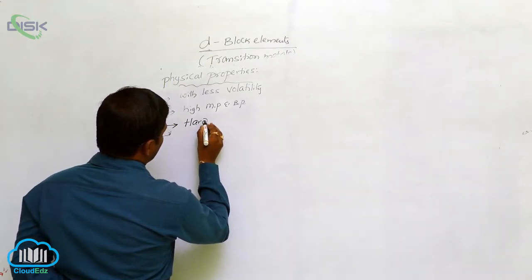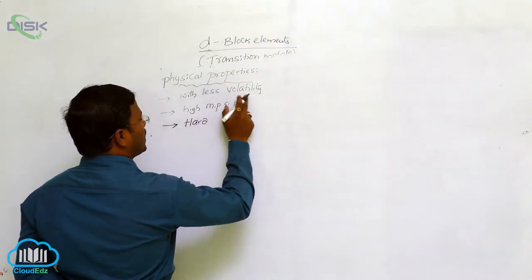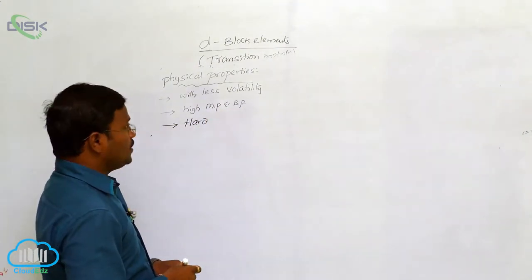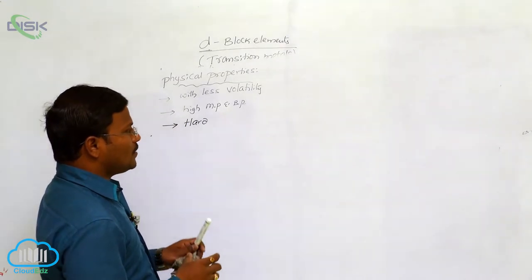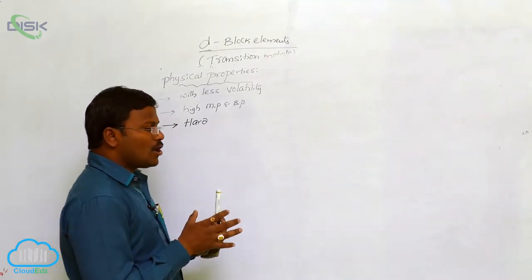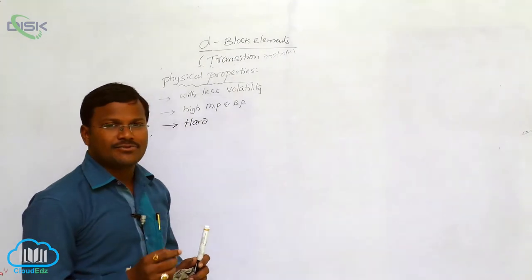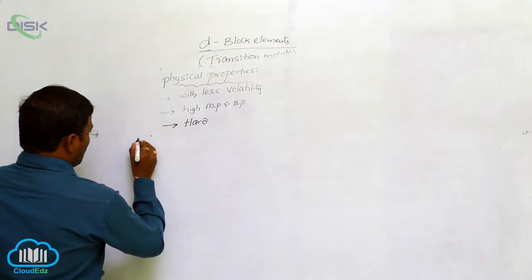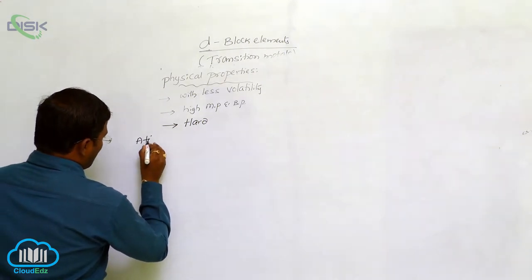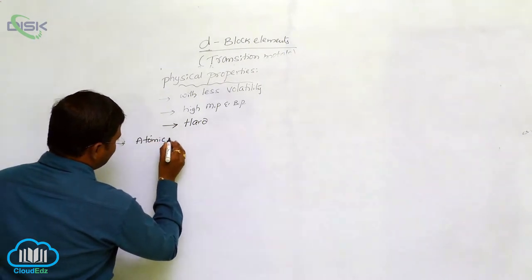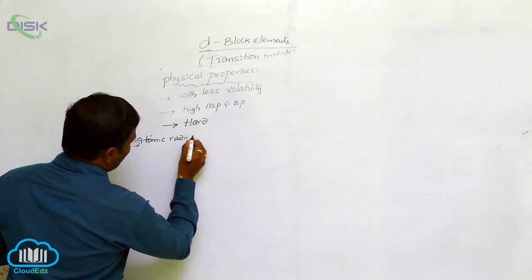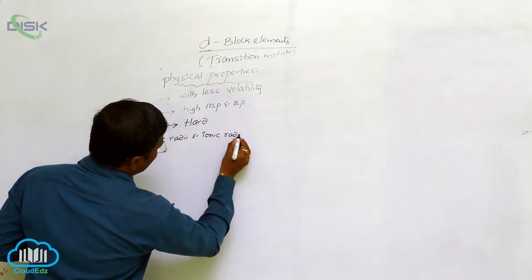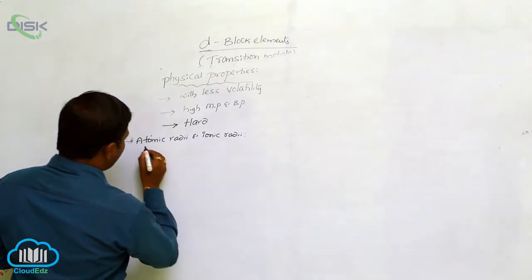D-block elements are hard in character with less volatility and high melting and boiling points. Most widely, the elements that come under the d-block category are precious and industrially important elements.